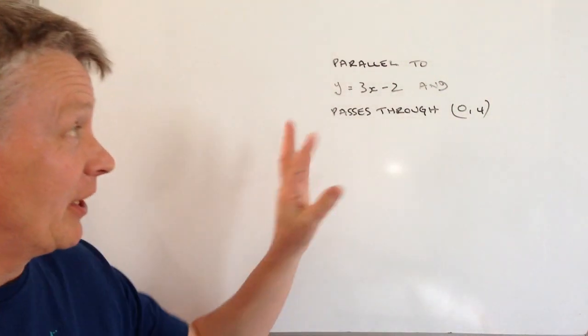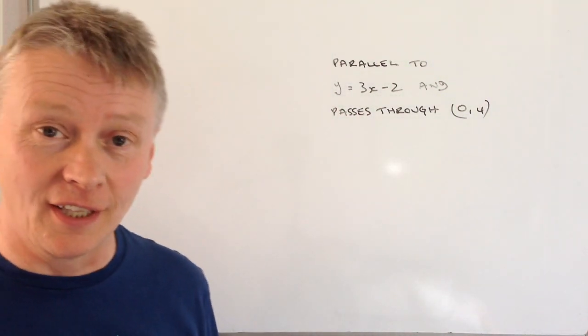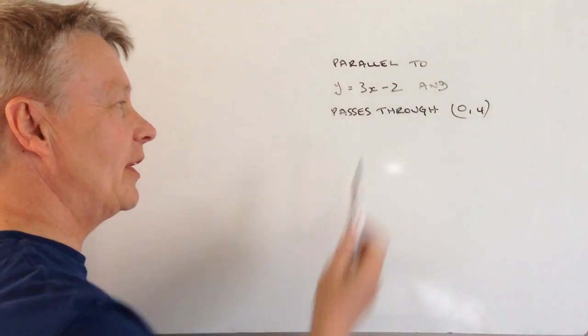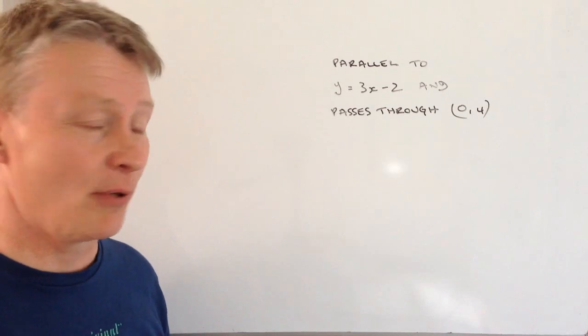Hi, in this video we're looking at this question: write down the equation of a line which is parallel to y equals 3x minus 2 and passes through this point.